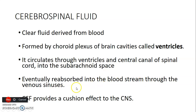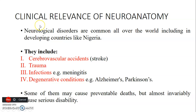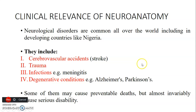CSF mainly provides a cushion effect for the central nervous system. You need to understand neuroanatomy because there are neurological disorders common all over the world, such as cerebrovascular accidents like stroke, trauma from accidents, infections such as meningitis and encephalitis, and degenerative conditions such as Alzheimer's disease and Parkinson's. All these affect the nervous system, and understanding neuroanatomy helps you understand how these conditions come about. Some of them may be causes of preventable death. Thank you.